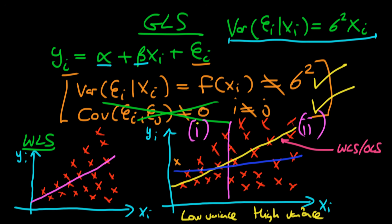What happens if we add a similar point in region 2 — at a similar distance from the line? This extra point is in a high variance region, so we know there will generally be quite a large spread of points away from the line. Just because we have one extra point further away doesn't mean we should change our line of best fit that much — perhaps we just adjust it only a little bit.